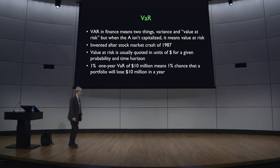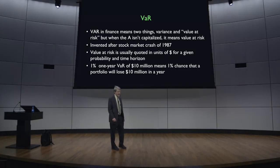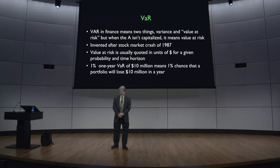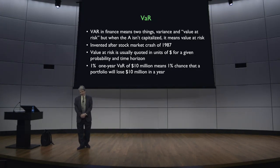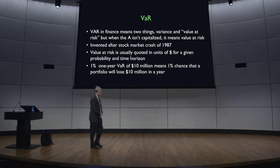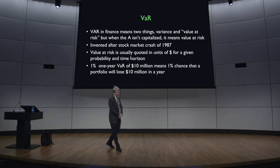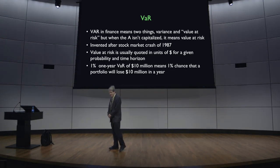I just mentioned there's something else in finance called VAR. On this slide it means two things: variance and value at risk. But actually there's a third one — vector autoregressive. I was just thinking that it can be confusing.